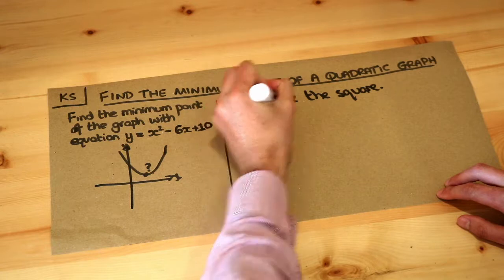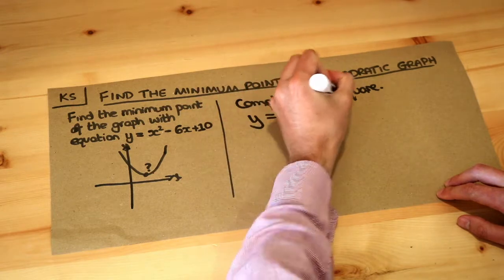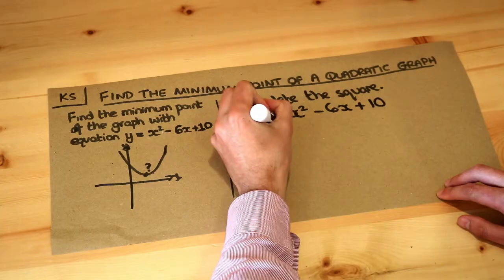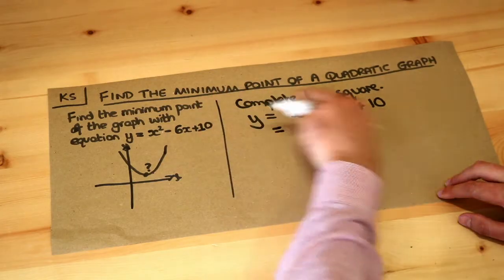So let's do that. We've got y equals x squared minus 6x plus 10. We explored how to complete the square in another video, so please watch that first if you don't know what that means.